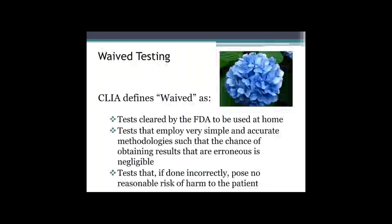We will discuss waived testing first. The CLIA rule established provisions for categorizing a test as waived. Waived tests are test methods that are essentially exempt from regulatory oversight if they meet certain requirements established by the statute. CLIA defines waived as tests cleared by the FDA for home use — so patients can basically purchase these products over the counter — tests using such simple and accurate methodologies that the likelihood of erroneous results is negligible, and tests that pose no reasonable risk of harm to the patient if the test is performed incorrectly.